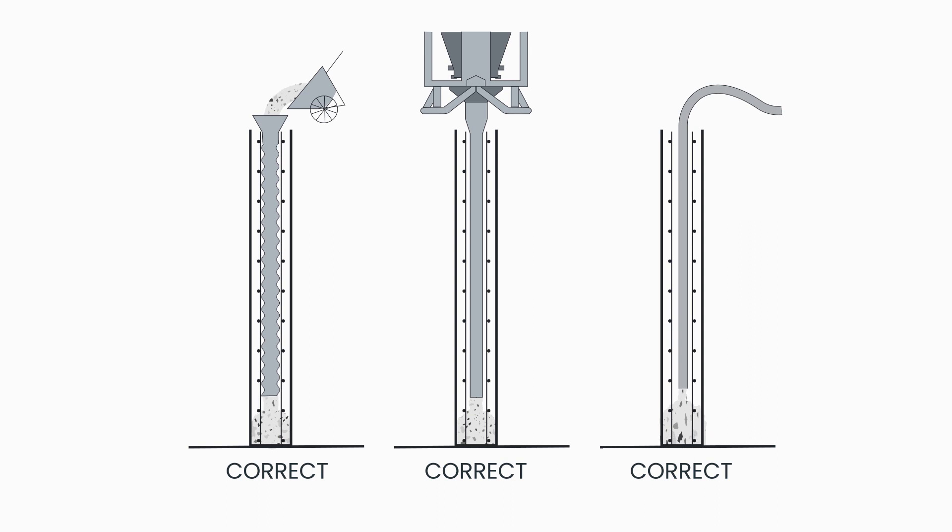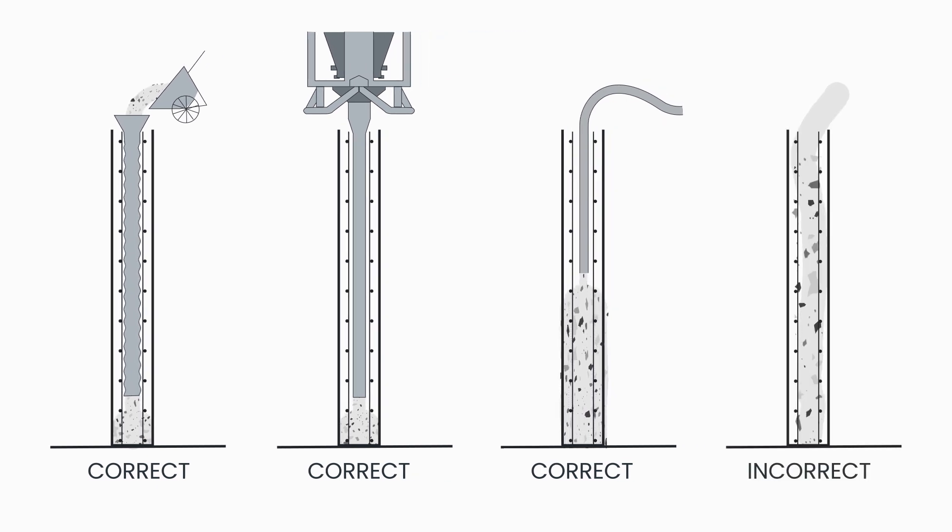When placing with a concrete pump, extend the hose to the bottom of the form and withdraw as the form is filled. Long, uncontrolled drops cause segregation, as the concrete strikes against the forms and aggregates ricochet off reinforcement.